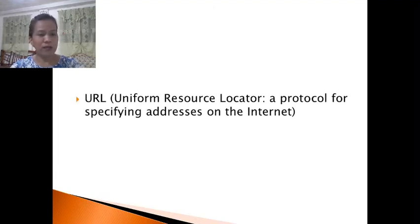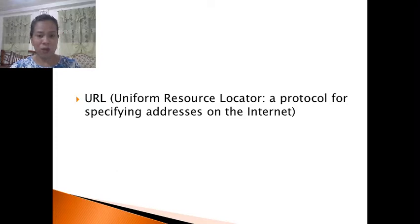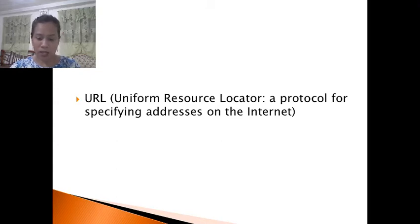When evaluating a website, there are several things to take into consideration. One of the first things to look at is the URL — Uniform Resource Locator — a protocol for specifying addresses on the internet. This can often tell you several things about a website: the creator, the audience, the purpose, and sometimes even the country of origin.